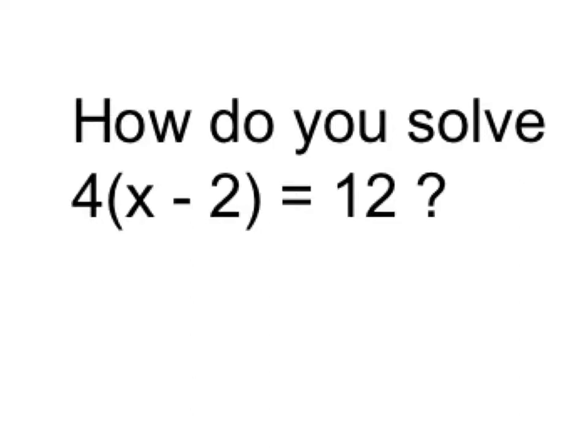There are a couple different ways we could solve an equation like this involving parentheses. We could distribute the 4 to the x and to the minus 2, and solve it as a regular 2-step. Or, because 4 is being multiplied by this whole thing, we could undo that through division. That's what I'm going to do in this example, but there are multiple ways to do it.